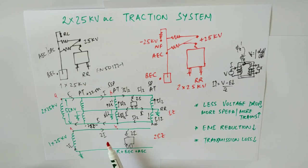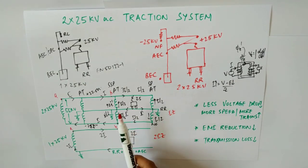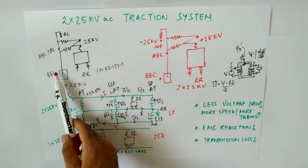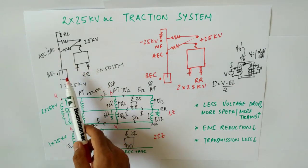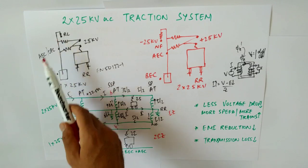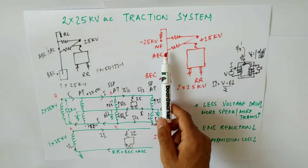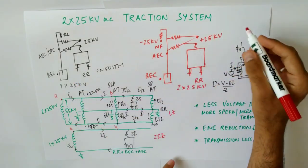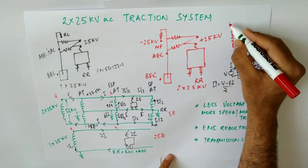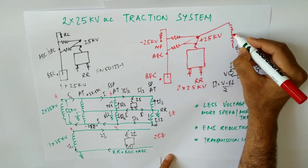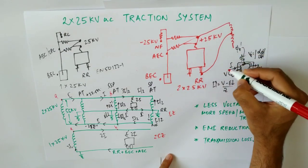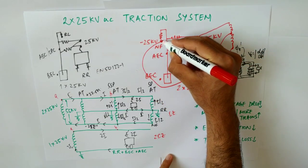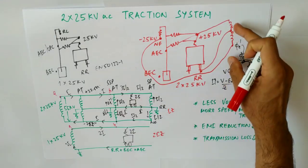Furthermore, transmission losses are reduced. Similar to the booster transformer return system — where return current was taken away from running rails, BEC, and OPC to the RC — in 2×25 kV all return current is taken back through the negative feeder. The transformer winding connection connects the earthing point and the minus 25 kV negative feeder to the corresponding winding terminals.